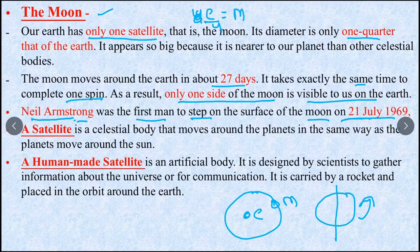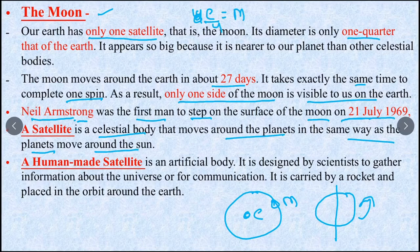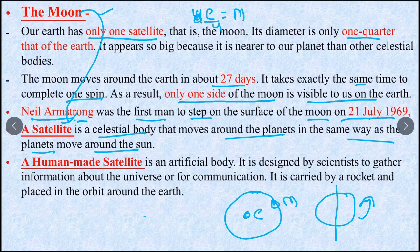Now we look at satellites. A satellite is a celestial body that moves around the planet in the same way as planets move around the sun. See, we know that the moon is a satellite.